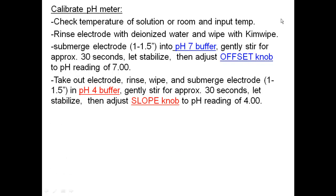Then we're going to take the electrode out, rinse it, then submerge it about an inch or so into the pH 4 buffer. Gently stir for about 30 seconds. Then we use the slope knob to adjust to 4. So we calibrate the instrument of what 7 is and what 4 is. Then you place the electrode in tap water until you're ready to use it.